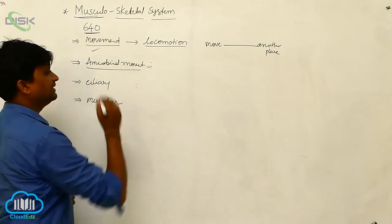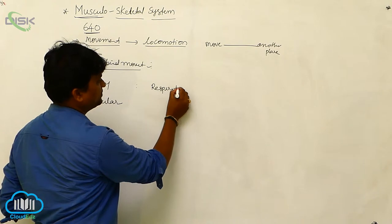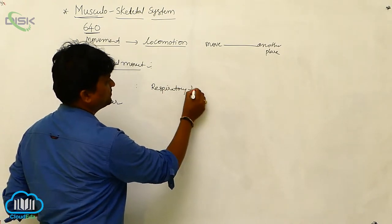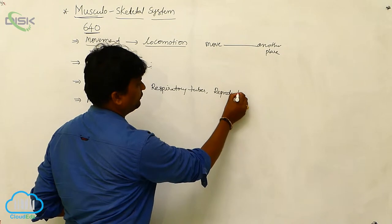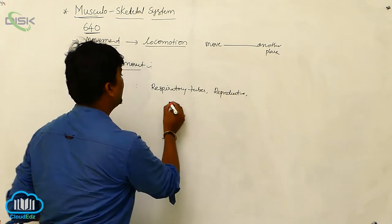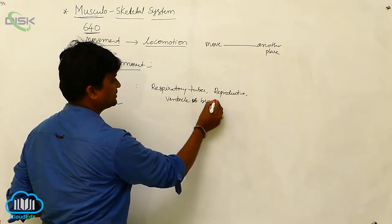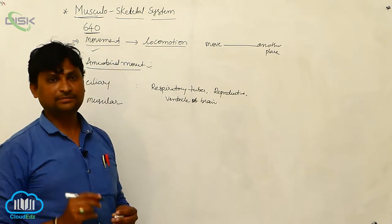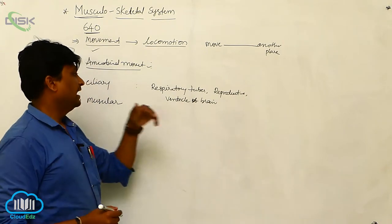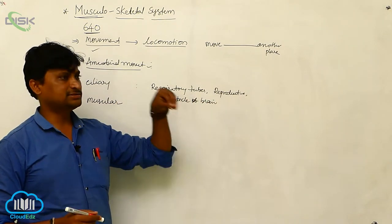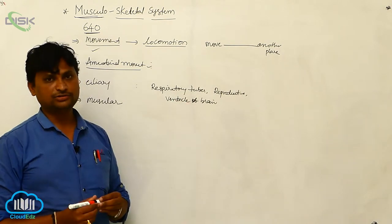Next is ciliary movement. Ciliary movement is basically present in tubes — especially respiratory tubes and reproductive tubes. Ciliary tubes include the fallopian tubes and the ventricles of the brain, which consist of ciliary epithelium with small cilia. The movement of cilia helps move particles to the alveolus, moves ova and gametes, and also moves cerebrospinal fluid in the ventricles of the brain.